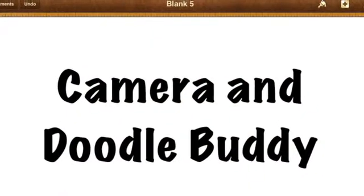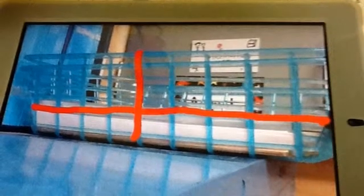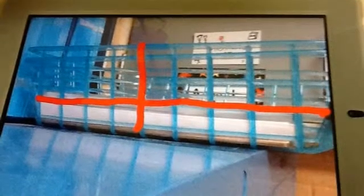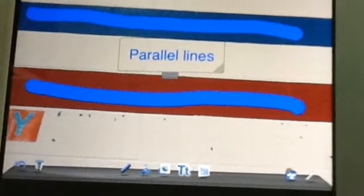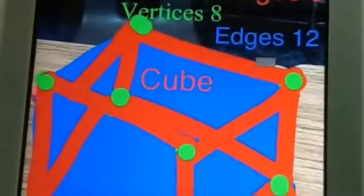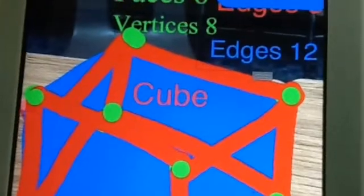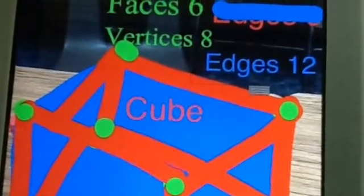The iPad camera and the DoodleBuddy app can be combined to take pictures of objects in the classroom and then import them into DoodleBuddy to be able to label things like perpendicular lines, parallel lines, solids such as cubes, can be labeled with vertices, edges, and faces.